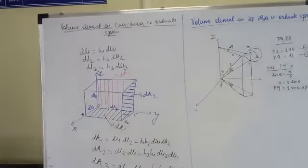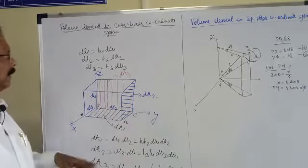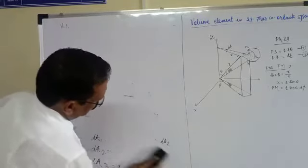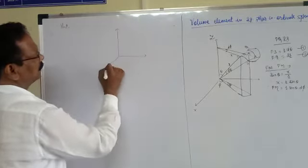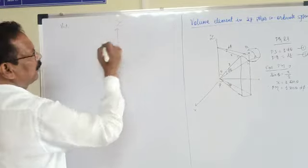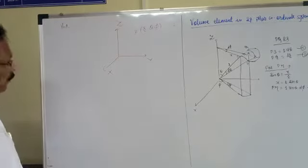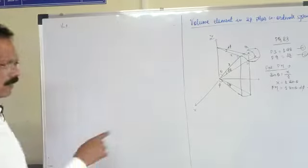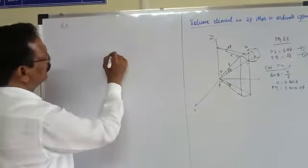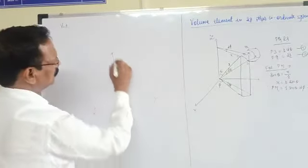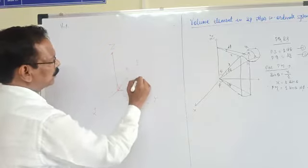Now we have to find the volume element in curvilinear coordinates. We draw the figure with x-axis, y-axis, and z-axis. In spherical polar coordinates, the coordinates of point P are r, θ, and φ. This figure is complicated, so I have already drawn it. We have to find the volume of element PQRS.